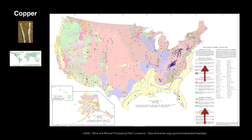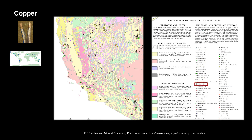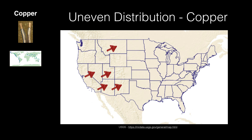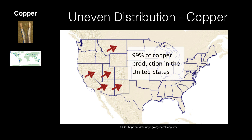Looking at the southwest United States, you can see that copper is found only in a few areas in the southwest and a little bit further north. In the United States, Arizona, Utah, New Mexico, Nevada, and Montana accounted for 99% of copper production.